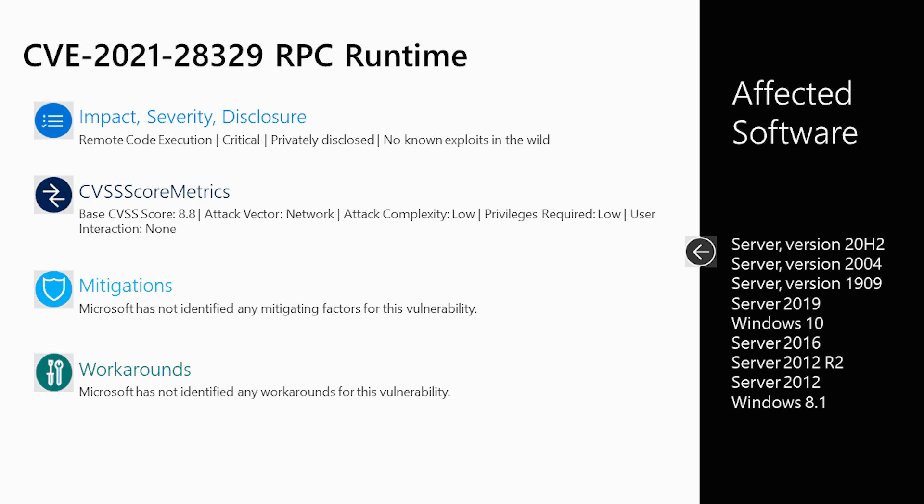The second vulnerability is CVE-2021-28329, a Remote Procedure Call runtime remote code execution vulnerability. There are actually 27 very similar vulnerabilities this month with the same headline, rated at 8.8 on a scale of 10. The attack vector is over the network, low complexity, low privileges required, and no user interaction is required — which is one of the reasons why this is an 8.8. You can protect yourself simply by installing Windows updates. There are no workarounds or mitigations; install the patch as soon as you can and you will be protected.